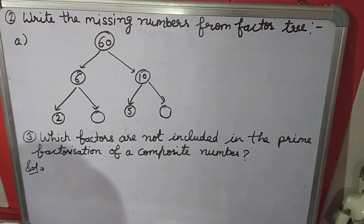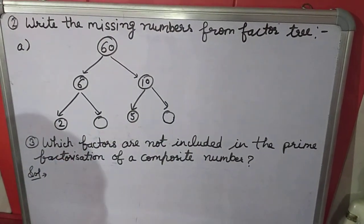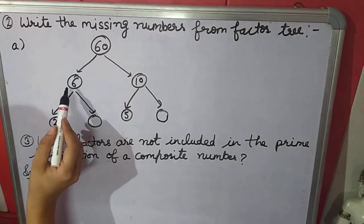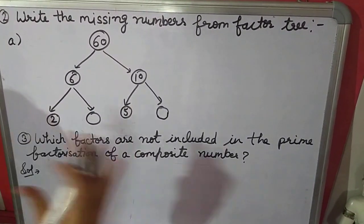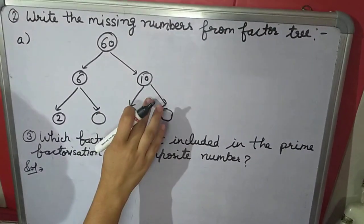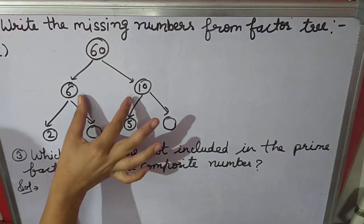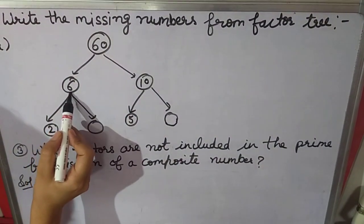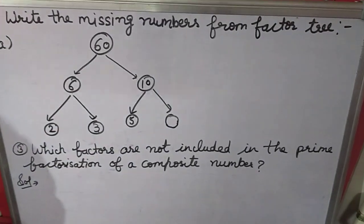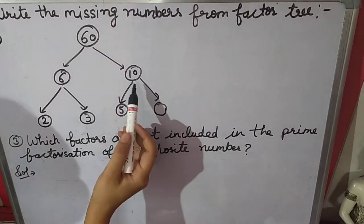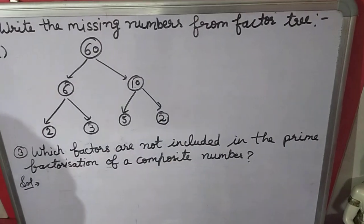Second question: write the missing numbers from the factor tree. A factor tree is given and we have to find the values of missing numbers. For 60, the factors are 6 and 10. For 6: 2 times 3 is 6. For 10: 2 times 5 is 10. This completes the factor tree.